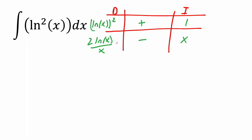However, I see something special. If I take this piece and multiply it by x, the x's will cancel and I get ln(x). I know I can solve ∫ln(x) using the tabular method — I've done that before. That's why I call this type 2.